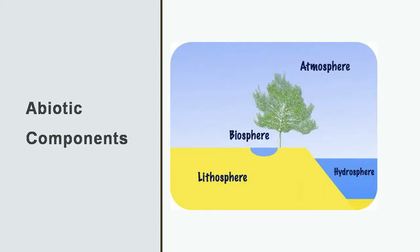It includes two components: biotic and abiotic. What are biotic components? Biotic includes all human beings, plants, animals, and microbes. What are abiotic components? It includes light, air, water, and soil.